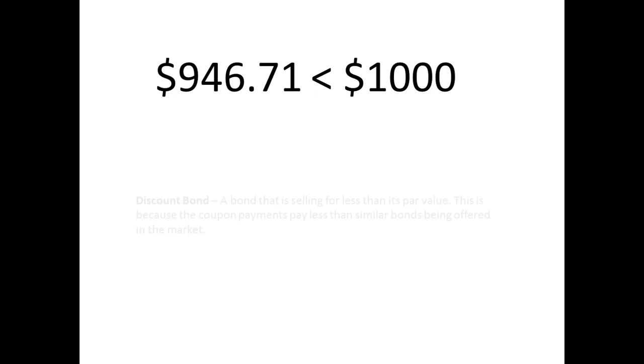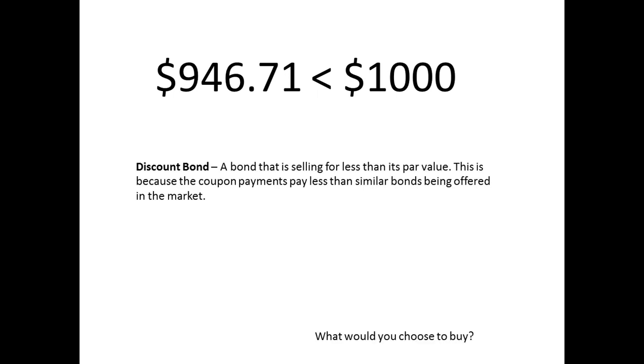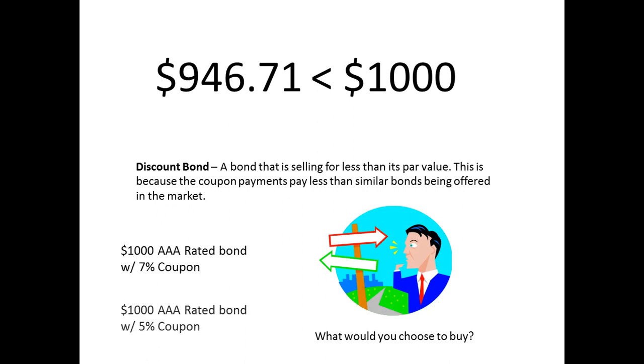Why would an investor purchase a bond for $1,000 that only pays 5% when they could go buy a similar bond that would pay 7%? There is less demand for these bonds, and therefore the prices fall until they are correctly priced.